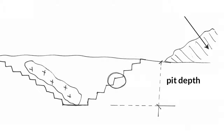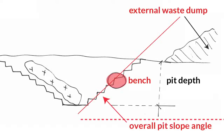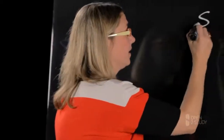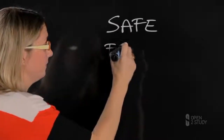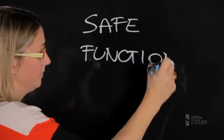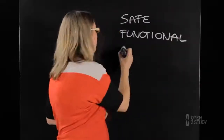The pit depth is the total depth of the pit from the lowest point on the floor to the top of the top bench. The waste material is removed from the pit and stored in an external waste dump. The amount of waste rock depends on our choice of the overall pit slope angle, defined as the angle formed by joining the toe of the lowest bench to the crest of the top bench.